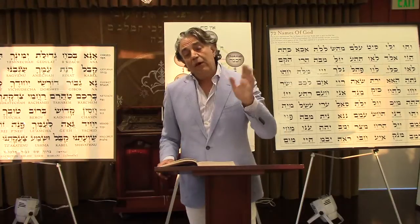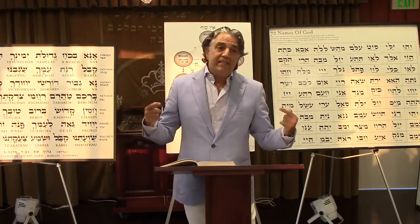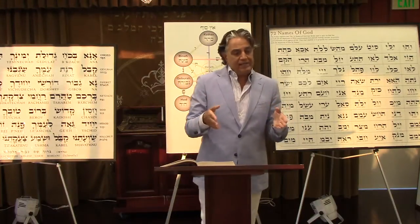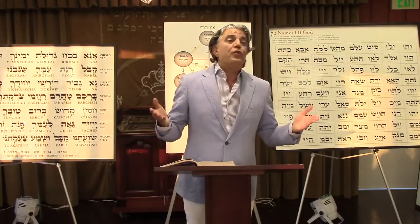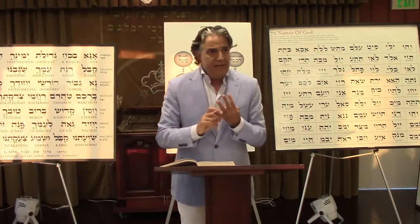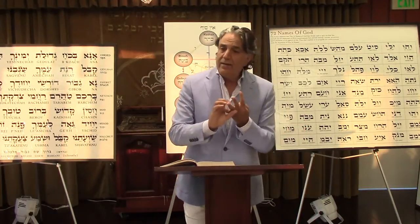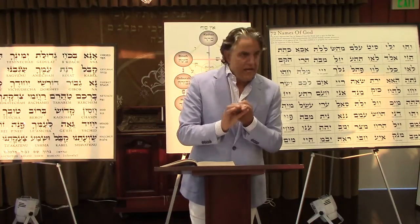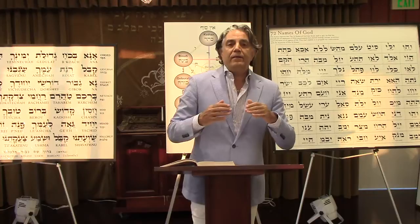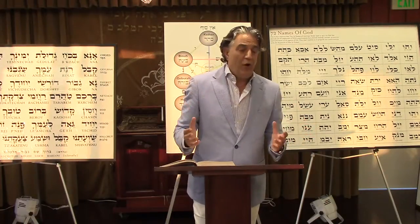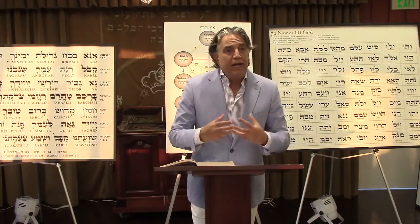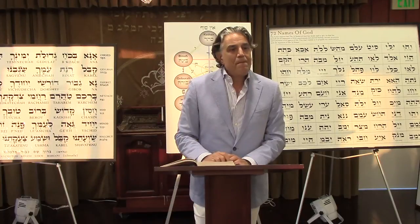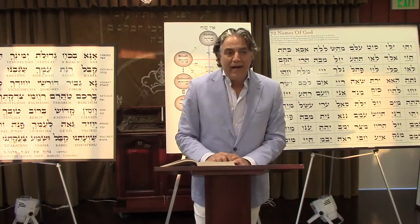The other five planets each rule two constellations. Planet Venus rules over Taurus and also Libra. Taurus is an earth sign — we have four different signs: earth, water, fire, and air. The external energy of Taurus is earth, but the internal energy of Taurus is fire.